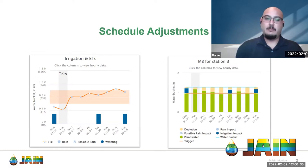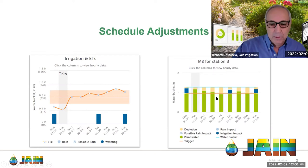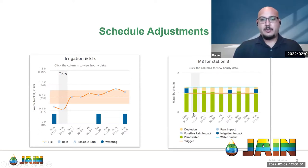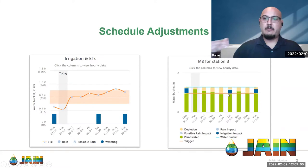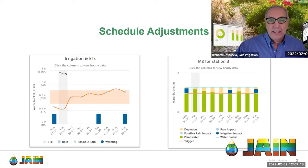This chart on the right shows our water bucket broken down daily. The orange line represents our trigger level — once we hit that level, we want to recharge the root zone and refill it with water up to the blue line, which is our soil capacity. We don't want to exceed that because then we risk water runoff, puddling in some areas, or watering deeper than the roots.